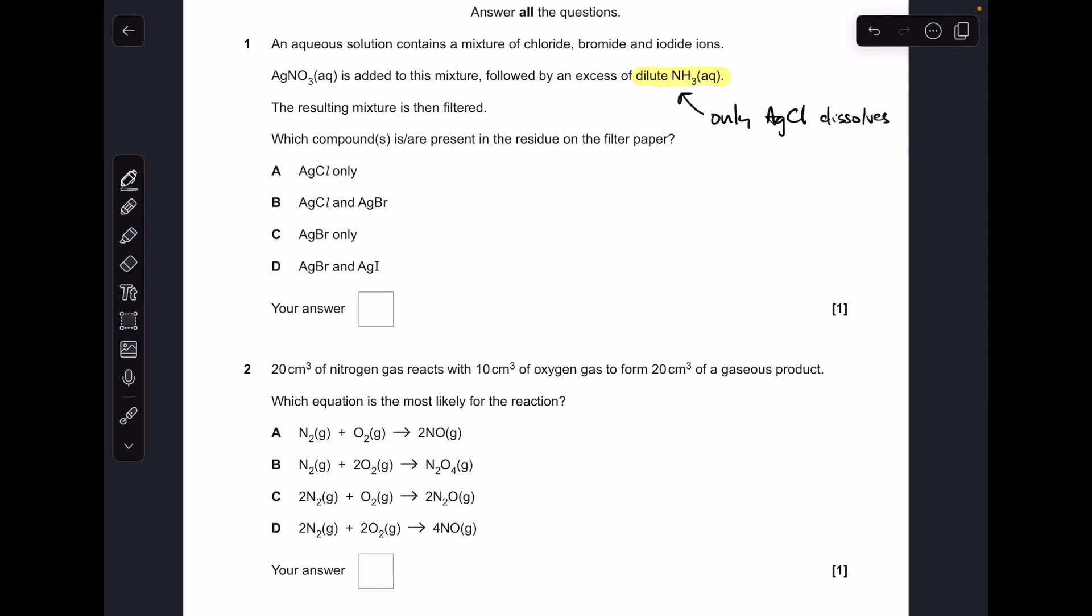Okay, let's make a start. We've got a mixture of chloride, bromide, and iodide ions. The silver nitrate is going to make silver chloride, bromide, and iodide. But because it's dilute ammonia that's gone in next, only the silver chloride dissolves. So what's going to be left on the filter paper is a mixture of silver bromide and silver iodide. It was option D.